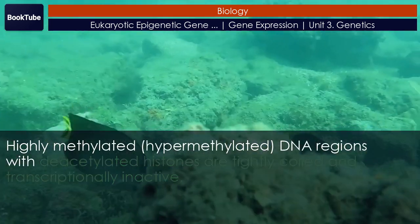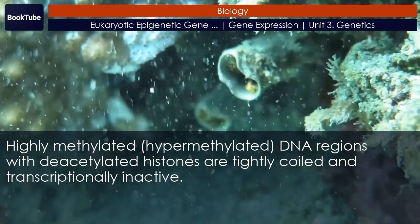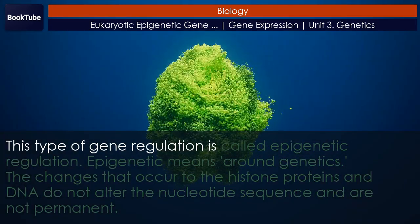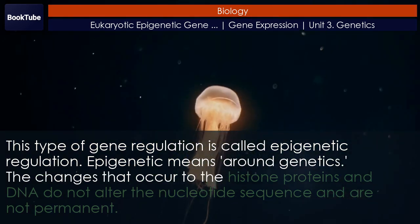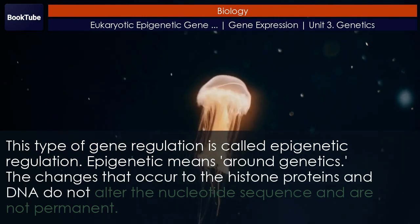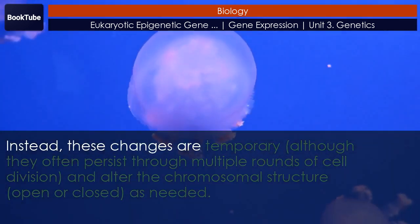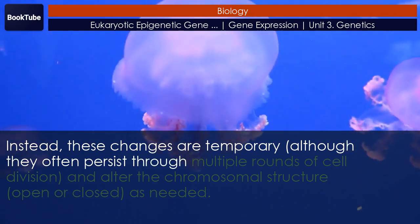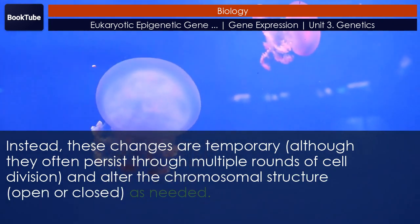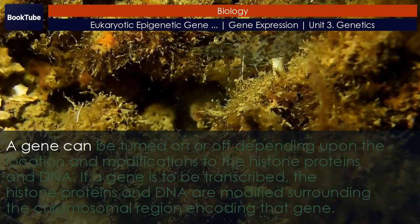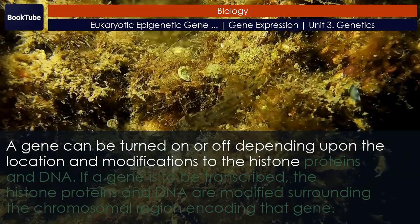Hypermethylated DNA regions with deacetylated histones are tightly coiled and transcriptionally inactive. This type of gene regulation is called epigenetic regulation. Epigenetic means 'around genetics.' The changes that occur to the histone proteins and DNA do not alter the nucleotide sequence and are not permanent. Instead, these changes are temporary, although they often persist through multiple rounds of cell division and alter the chromosomal structure — open or closed — as needed. A gene can be turned on or off depending upon the location and modifications to the histone proteins and DNA.